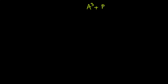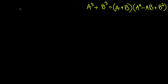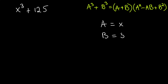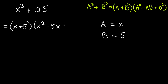And for the sum of cubes: a cubed plus b cubed equals (a plus b)(a squared minus ab plus b squared) — same structure but the sign changes. For example, x cubed plus 125: a is x and b is 5, since 5 times 5 times 5 is 125. So the answer is (x + 5)(x squared minus 5x plus 25).